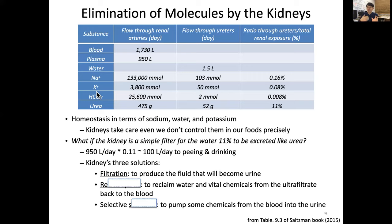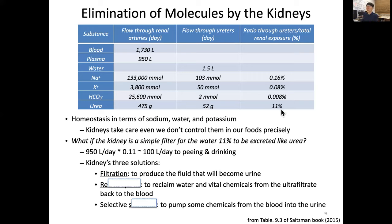Another example is something small enough that we don't want it, because if it accumulates in the body, it can be toxic — and in fact it is toxic. Urea is generated by processing protein. Urea is a very small molecule with a molecular weight of 60.6. Per day, about 475 grams of urea passes through the kidney, and the kidney eventually secretes about 52 grams of this urea through the ureter inside our urine — that's about 11%.